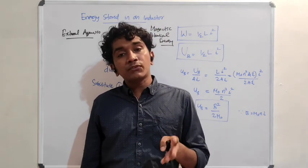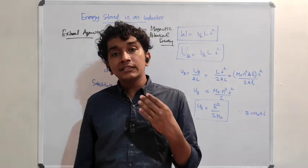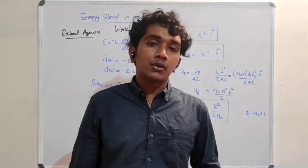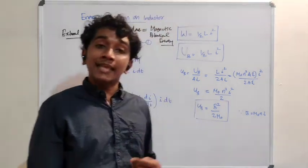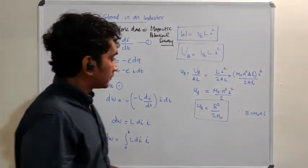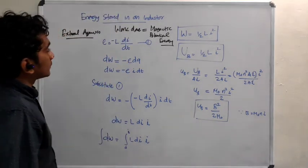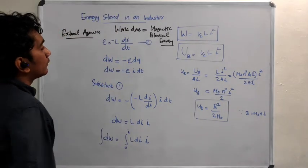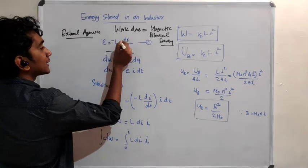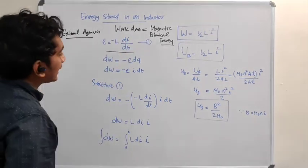We also want to find out the energy stored per unit volume — the energy density — as well. So first, we know that the induced EMF is equal to minus L times dI divided by dt.